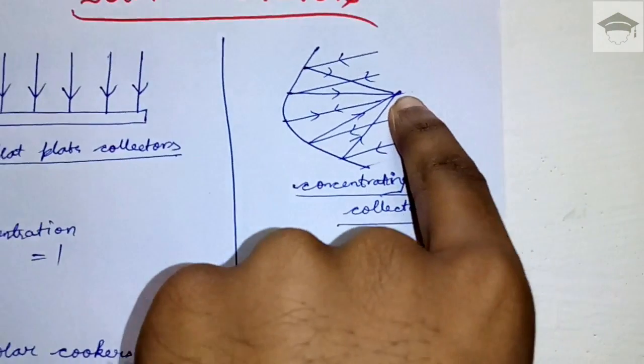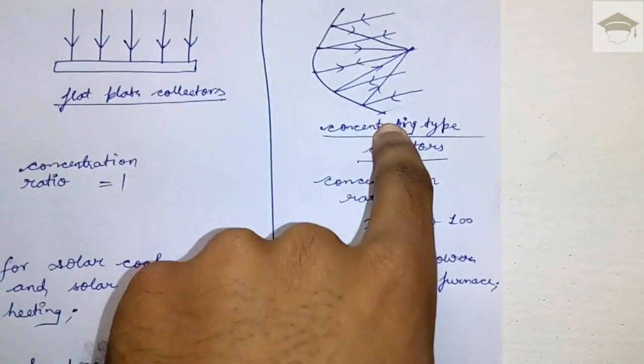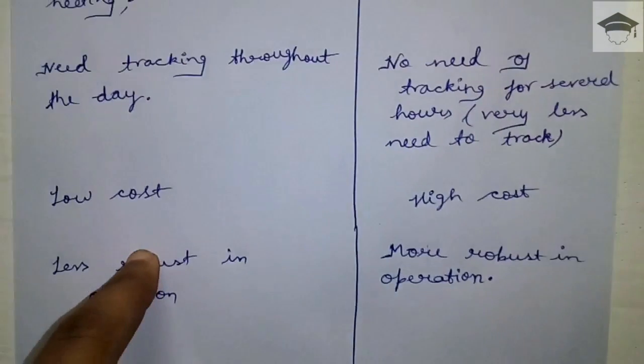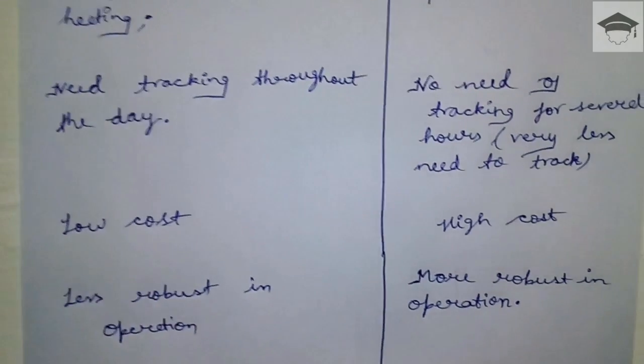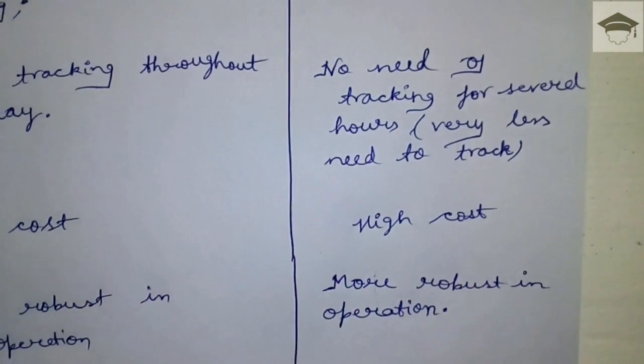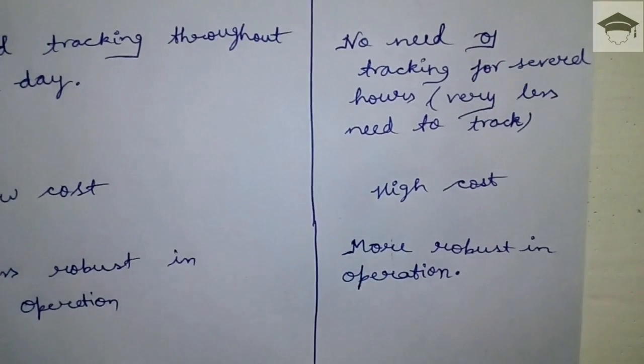Flat plate collectors are less robust in operation because they are simple - dust collects over them reducing efficiency. So periodic cleaning, wear and tear maintenance needs to be done for flat plate collectors.